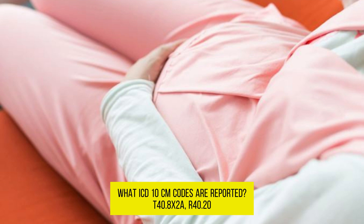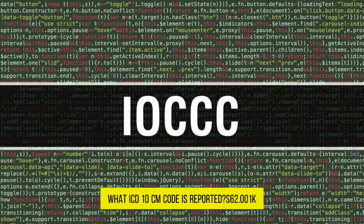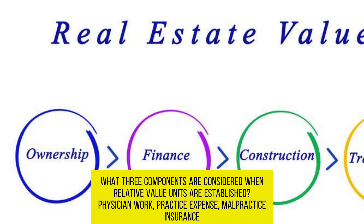T40.8X2A, R40.20. A 63-year-old fractured her scaphoid bone in her right wrist 3 months ago in an accident. She now presents with a non-union of the scaphoid bone. What ICD-10-CM code is reported? S62.001K.